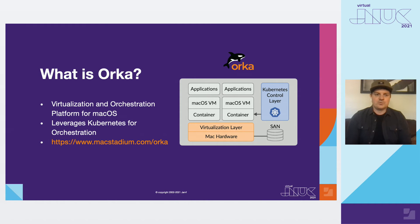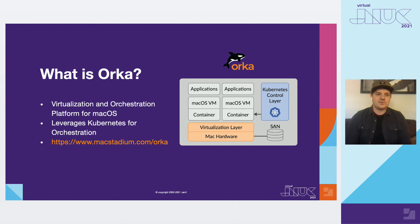I've got an architectural diagram here on the right-hand side as a visual aid. Basically, what we do is we take a group of Mac hosts and turn that into a Kubernetes cluster, which is connected to a storage area network for data sharing. On each physical host we put a hypervisor, and then we use Kubernetes to orchestrate containers in the cluster. And inside of each container, we stuff a full-blown macOS VM.